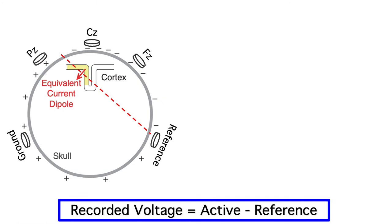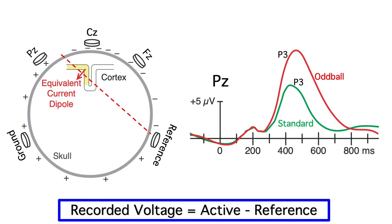The key is to always remember that the active and reference electrodes are equal partners in determining the voltage that we record. So when you see a channel labeled Pz, you're not just looking at the activity from the Pz electrode. You're looking at Pz minus the signal at the reference electrode.